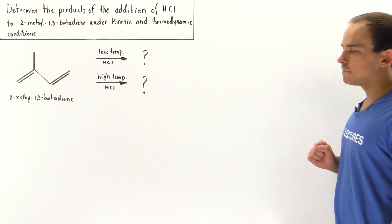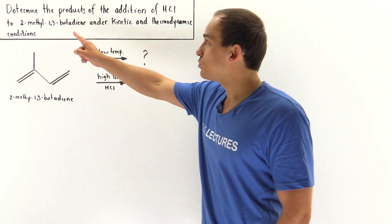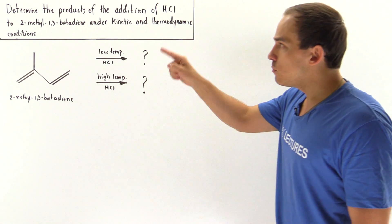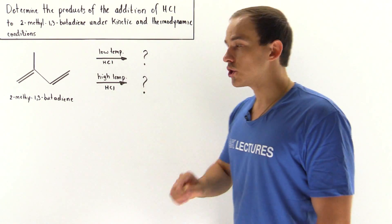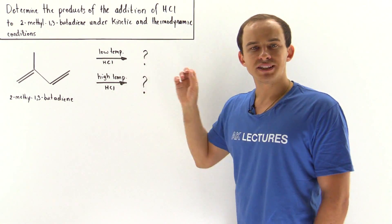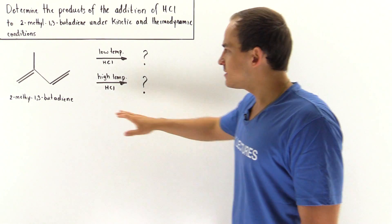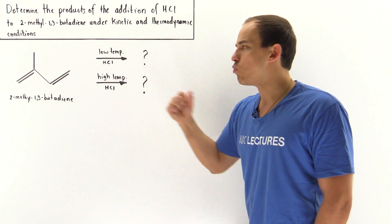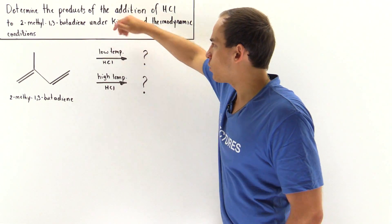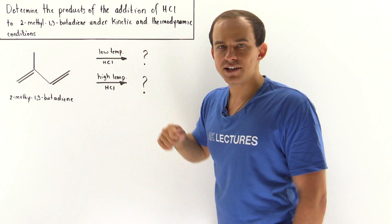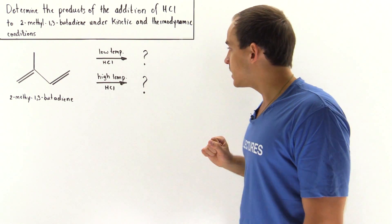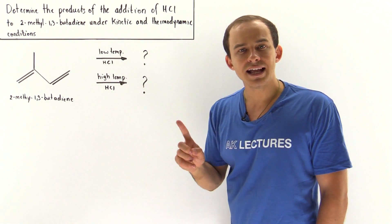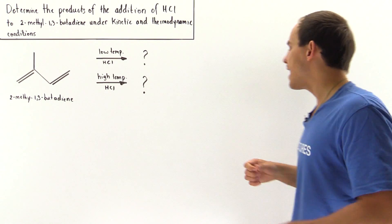Let's take a look at the following example in which we determine the products of the addition of HCl to 2-methyl-1,3-butadiene under kinetic control and thermodynamic control. The first pathway is low temperature addition of HCl with very little time. The second is high temperature addition of HCl with an unlimited amount of time.